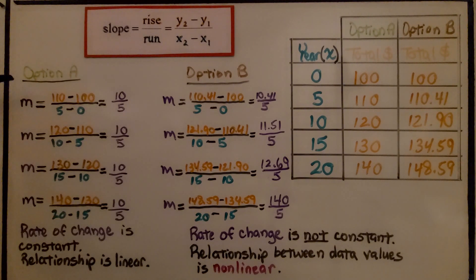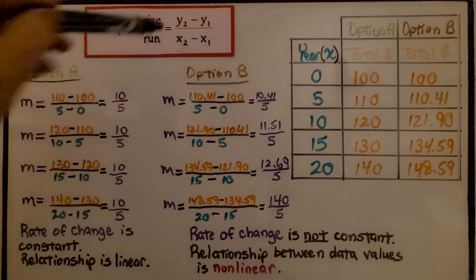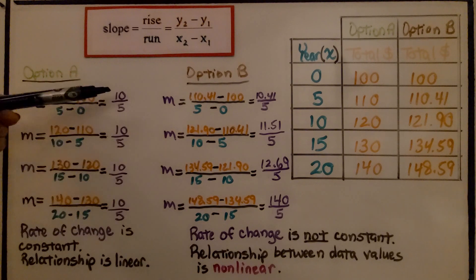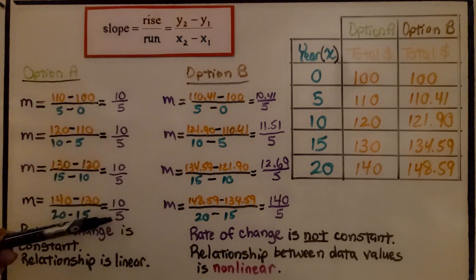We use the slope formula to find the rise over run, the rate of change for option A, and we get 10 fifths every time we use the slope formula. We can see the rate of change is constant. That means the relationship is linear. We have 10 for our rise and 5 for our run for every single one of these between all these points.